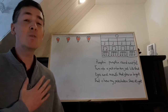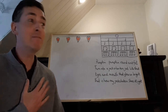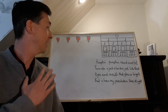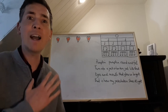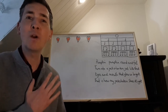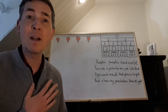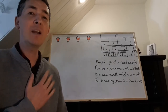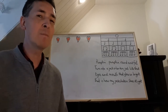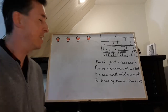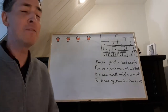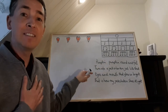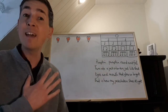Pumpkin, pumpkin, round and fat, turn into a jack-o'-lantern just like that. Eyes and mouth that glow so bright, that is how my jack-o'-lantern shines at night. Now if you were really observant, you might have noticed that just like with the four heartbeats, for each line that I said there were four heartbeats there too.